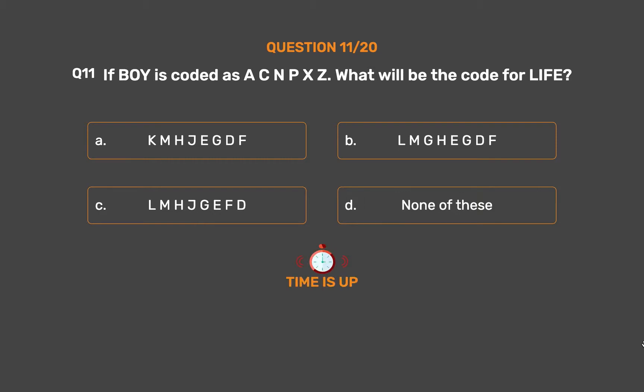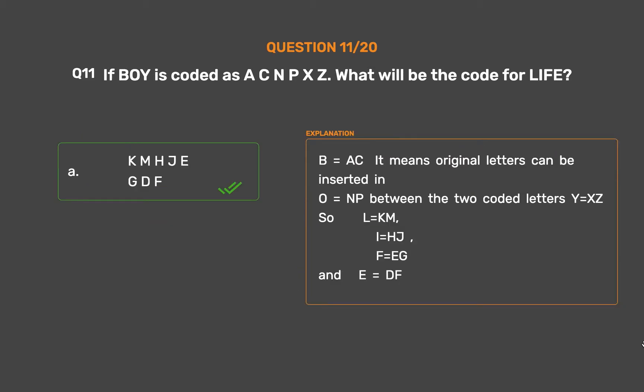The correct answer is Option A: KMHJEGTF. B=AC means each original letter is replaced by the letters on either side. So L=KM, I=HJ, F=EG, E=DF. Thus LIFE = KMHJEGTF.